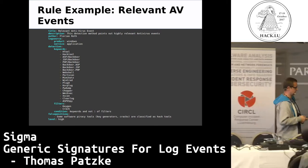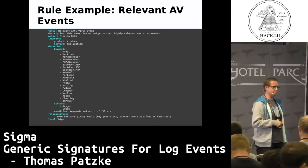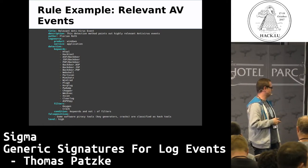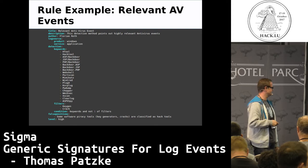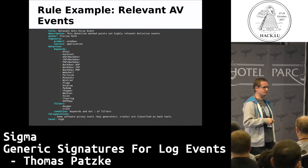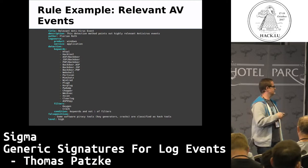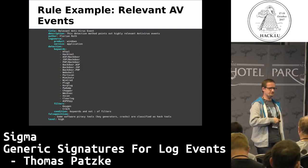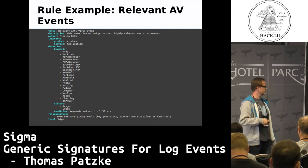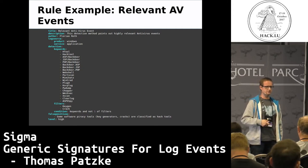Now a rule with another element: the condition. It's a bit more complex - something was added. This means keywords - this list - and 'not one of filters.' The sigma converter generates a rule that recognizes all events containing these keywords, and not these ones, because those are usually false positives.